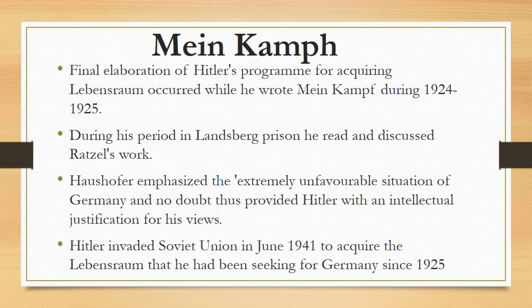These views were expressed in Mein Kampf and remained fundamentally the same through the following years. Indeed, an important reason for his decision to invade the Soviet Union in June 1941 was his desire to acquire the Lebensraum that he had been seeking for Germany since 1925. He envisaged settling Germans as a master race in western Russia while deporting most of the Russians to Siberia and using the remainder as slave labor. In this way, Lebensraum became one of the key reasons for World War Two, which has been covered in another lecture — the link is available in the description.